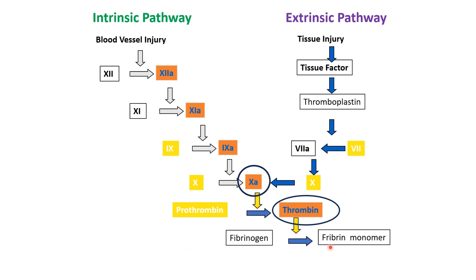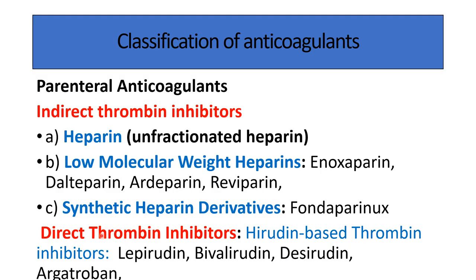Anticoagulant effect is achieved by inhibiting, directly as well as indirectly, the action on thrombin or factor 10a. Classification of anticoagulant drugs: there are two types — parenteral anticoagulants and oral anticoagulants. Parenteral anticoagulants are classified into indirect thrombin inhibitors and direct thrombin inhibitors. Indirect thrombin inhibitors include unfractionated heparin, low molecular weight heparins (enoxaparin, deltaparin, ardeparin, reviparin), and the synthetic heparin derivative fondaparinux. Direct thrombin inhibitors are hirudin-based: lepirudin, bivalirudin, desirudin, and argatroban.